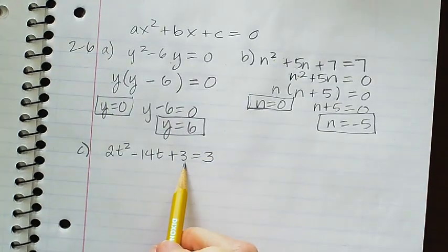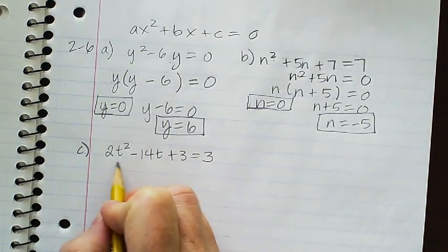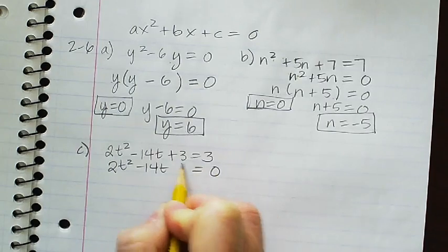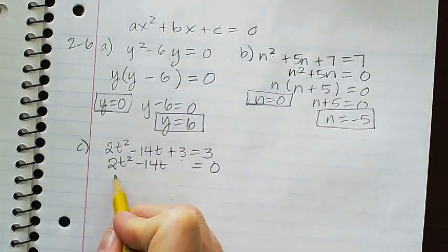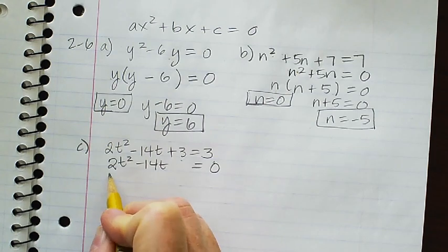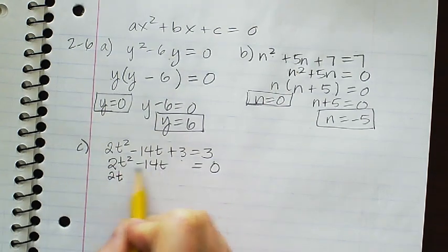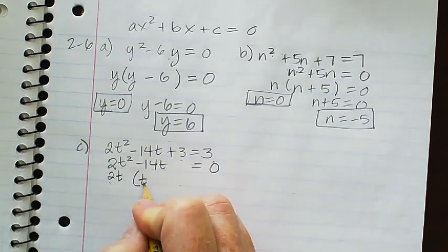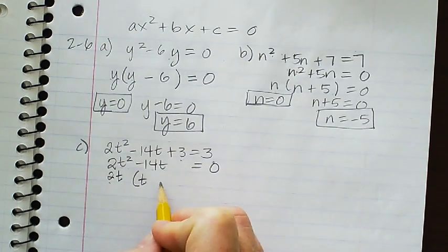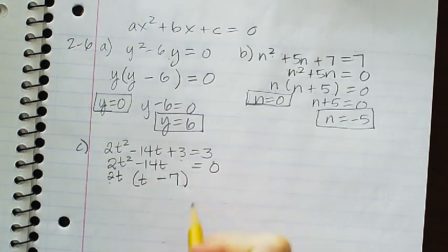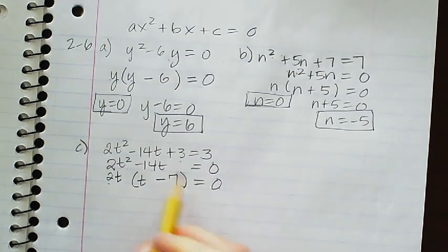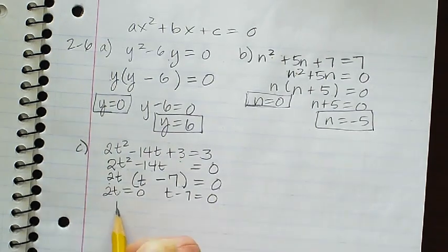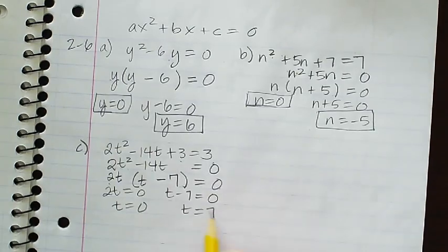Let's do the same thing here. You could write 2t squared minus 14t equals 0 — subtract 3 from each side and factor out the common factor of 2t. The greatest common factor for both terms is 2t. 2t times t is 2t squared, and 2t times negative 7 is negative 14t. Set equal to 0, either 2t is 0 or t minus 7 is 0, so either t is 0 or t is 7.